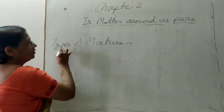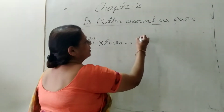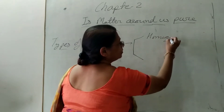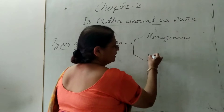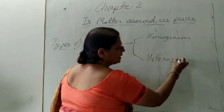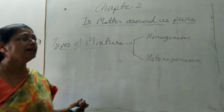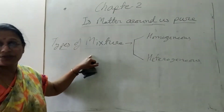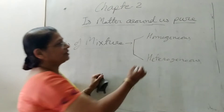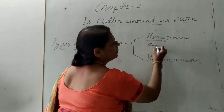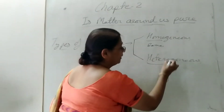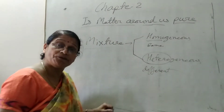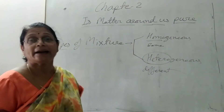Next, types of mixture. The first type is homogeneous and the second is heterogeneous. These are the two categories or types of mixtures. 'Homo' means same and 'hetero' means different.